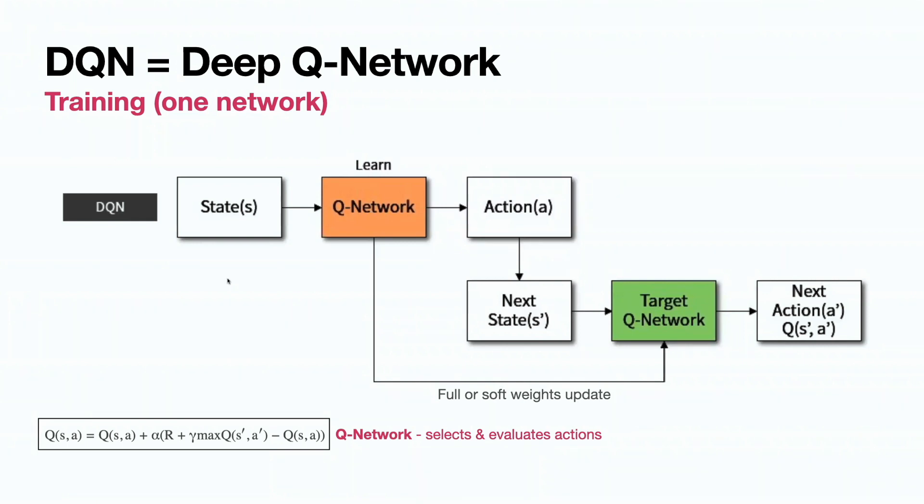Of course, you will say, that's not too effective because actually we are using the same network to train and to evaluate. If we made any mistake in a step, it will add up in the future because our evaluation network will go the same crazy as our training network. This is why this algorithm is a bit unstable, but this is the first and simple DQN algorithm. It has one network for training and evaluation of actions, and during training we update their weights.